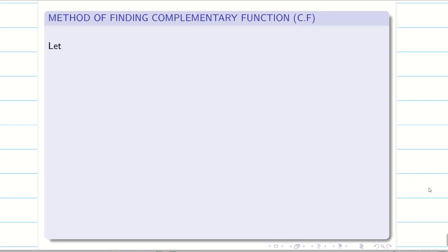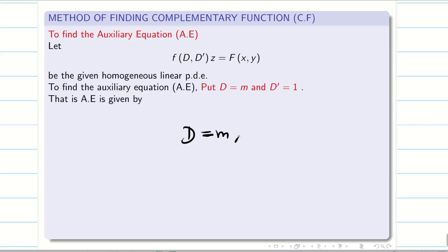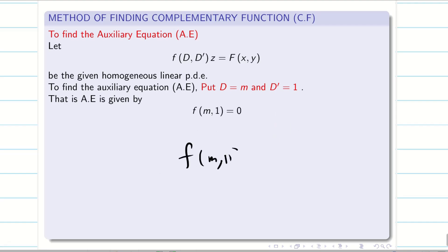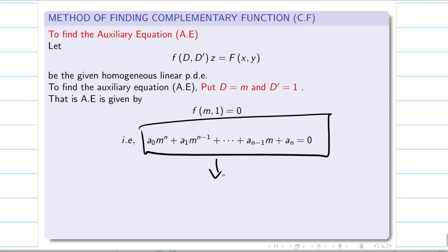We are going to see how to find the complementary function. To find CF, we make the RHS equal to 0. For PI, the general form is PI = (1/F(D, D')) × F(x, y). To find CF, we form the auxiliary equation: put D = m and D' = 1, so the PDE becomes F(m, 1) = 0 — a normal polynomial equation of degree n. Then find the roots.